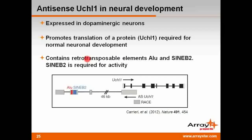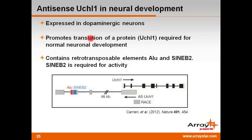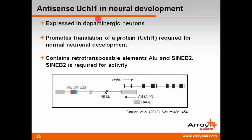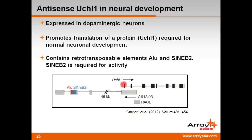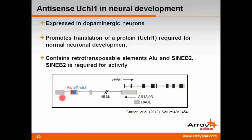Carrieri, Samaridhi, and colleagues demonstrated that an LNCRNA transcribed antisense to and partially overlapping with a protein-coding mRNA can regulate its expression. This LNCRNA, named AS-UCHL1, promotes translation of UCHL1, a protein whose loss causes ataxia and axonal degradation in mice, and so is required for normal neuronal development. AS-UCHL1, which is expressed in dopaminergic neurons, contains repeats for the repetitive elements ALU and SINB2, which are prominent mobile elements in mice, and the presence of the SINB2 element is required for AS-UCHL1 activity.